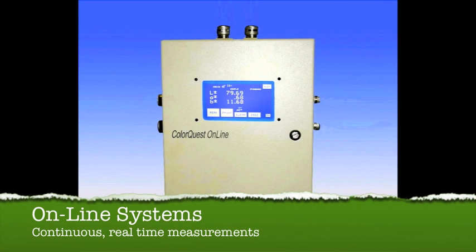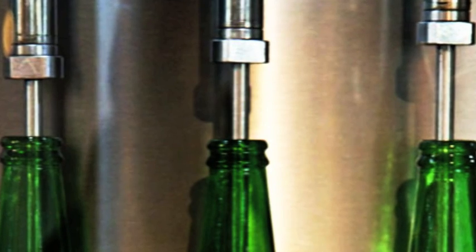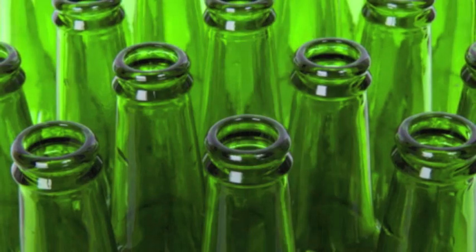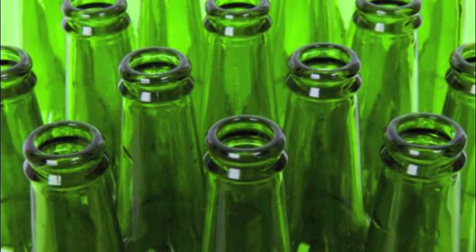Lastly are online systems, which are able to provide continuous real-time measurements of your products. They are often found on the processing lines for 24-7 inspection, which allows you to respond to product color changes when they happen.